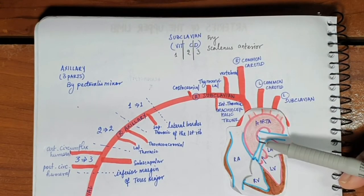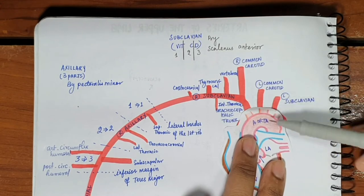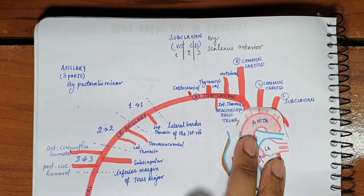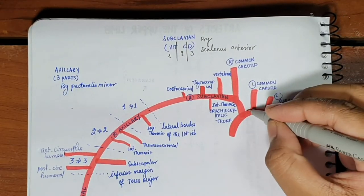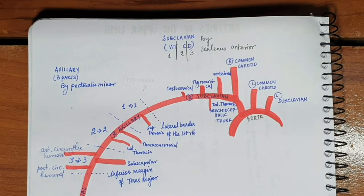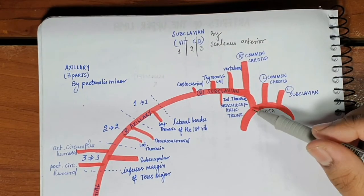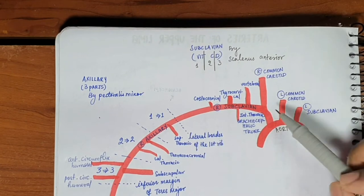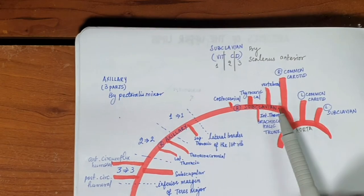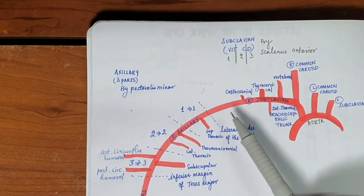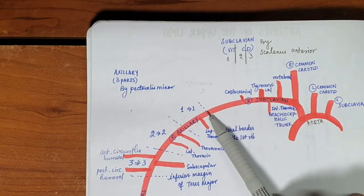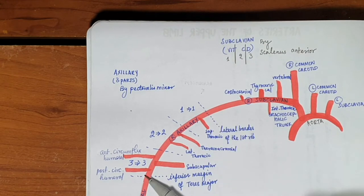This is the heart and this is the aorta. From the aorta we have three major vessels: the brachiocephalic trunk, the left common carotid, and the left subclavian. The brachiocephalic trunk divides into the right common carotid and the right subclavian. The right subclavian, after the lateral border of the first rib, becomes the axillary artery.